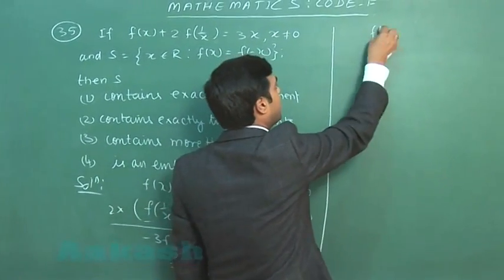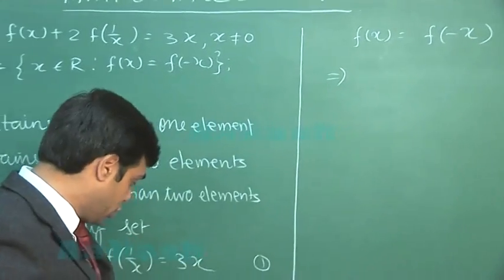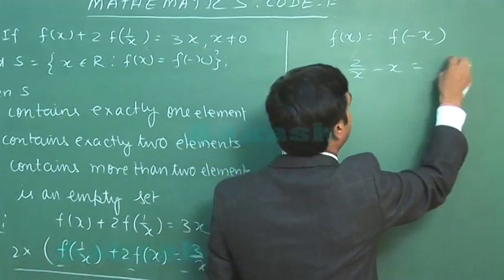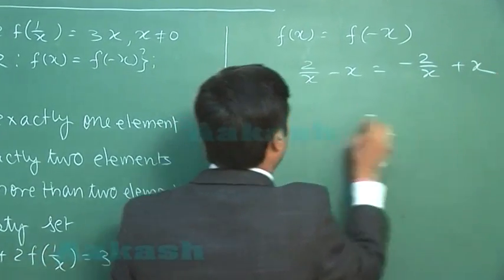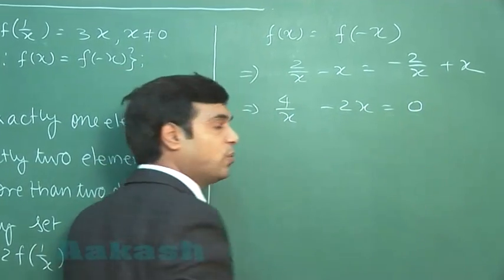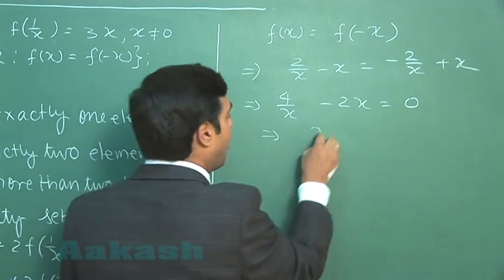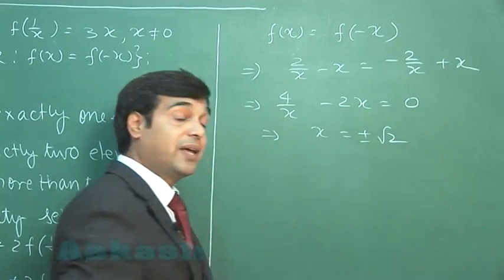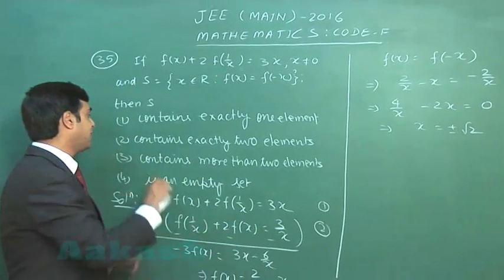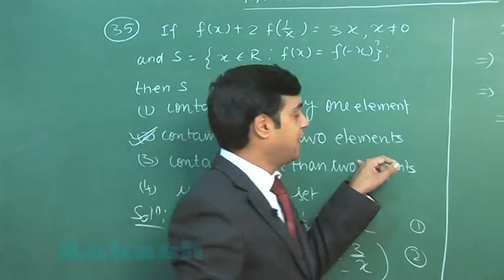We need f(x) = f(-x), that is 2/x - x = -2/x + x, or 4/x - 2x = 0. This is clear? So, from here we can see 4 - 2x² = 0, or x comes ±√2. So, there are two elements in set S. From the given options we can clearly see option number 2 which says it contains exactly two elements is the correct one.